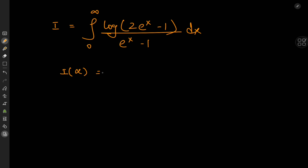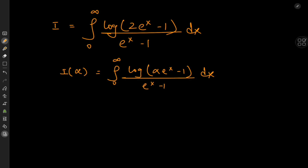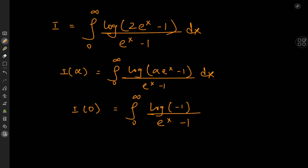The obvious looking choice would be to define the integral from zero to infinity of the logarithm of alpha times e to the x minus one divided by e to the x minus one dx, so that alpha equal to two is the target case. Although this looks like it could work, there is one complication. If we look for a particular value, for example i of zero: plugging in alpha equal to zero gives log of negative one divided by e to the x minus one. And log of negative one is not a real number — that's a complex number, and that's not something we want to get into.